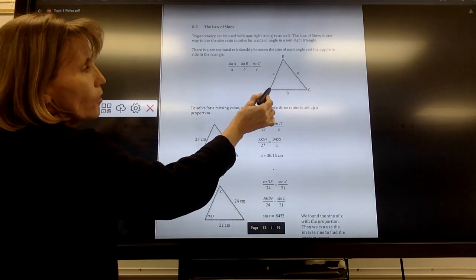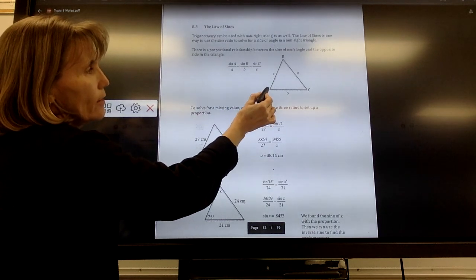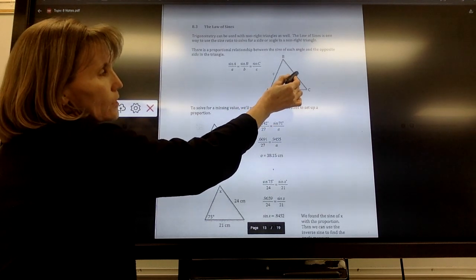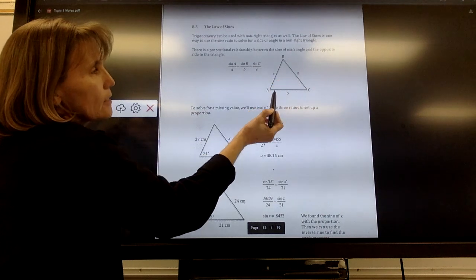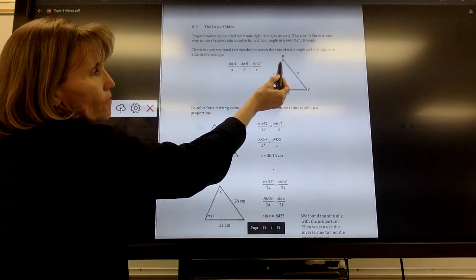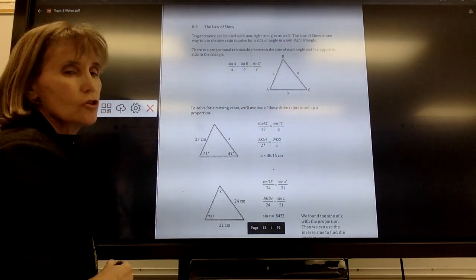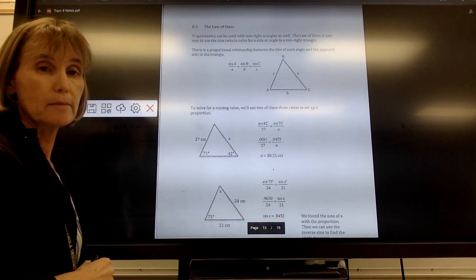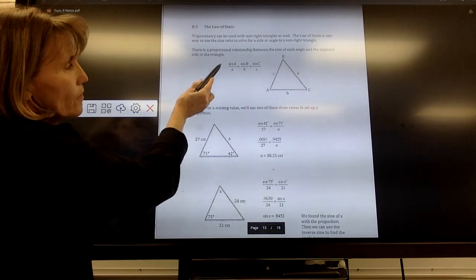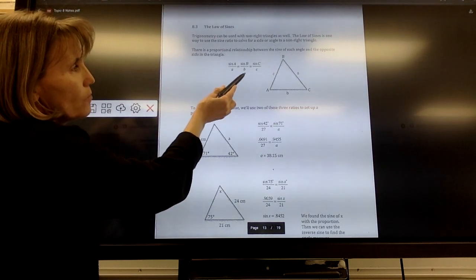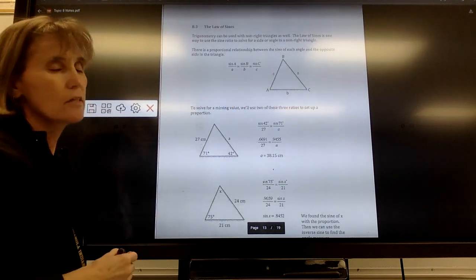So the sine of angle A, the sine measure of angle A here, is proportional to its opposite side length in the same manner that the sine of B is proportional to its side length, is in the same manner that C is to its side C. So sine of A over a is equal to the sine of B over b is equal to the sine of C over c.